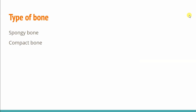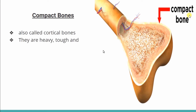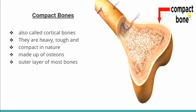First, we will see the compact bone. The outer covering of the bone is the compact bone. We also call it cortical bone. It is heavy, tough, and compact in nature. It is mainly made of osteons. Basically, we can say that osteons are the principal structural unit of bone. The compact bone is made with the help of osteons.